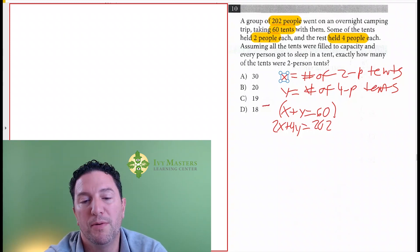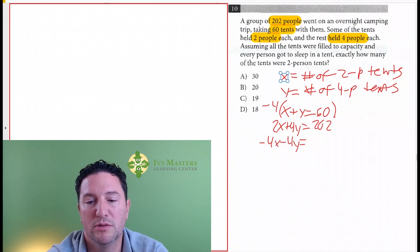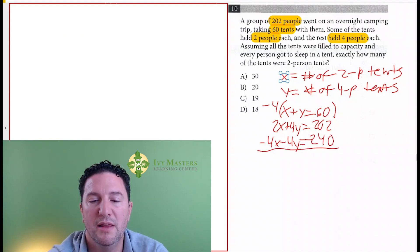So if I multiply this top by negative 4, then what I get is negative 4x minus 4y equals negative 240. Now when I add it down, these cancel. I get negative 2x equals negative 38.